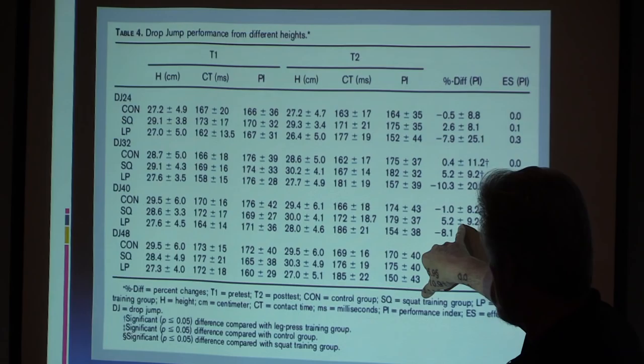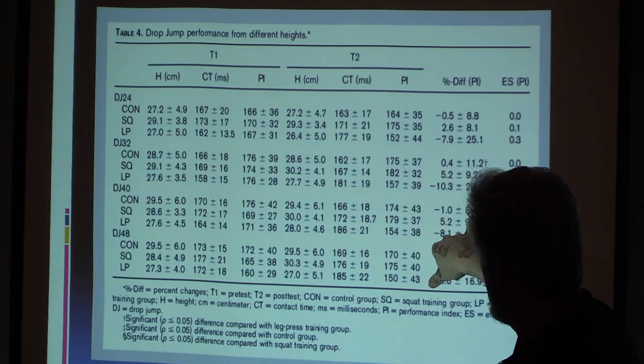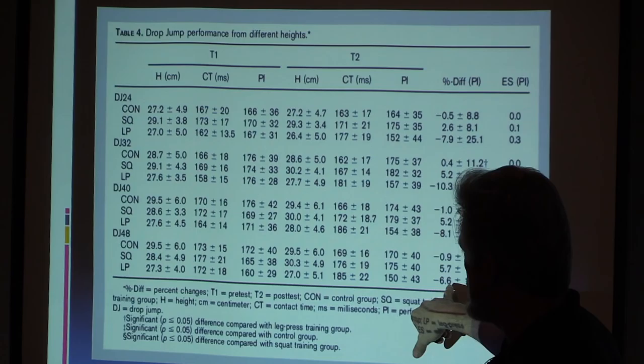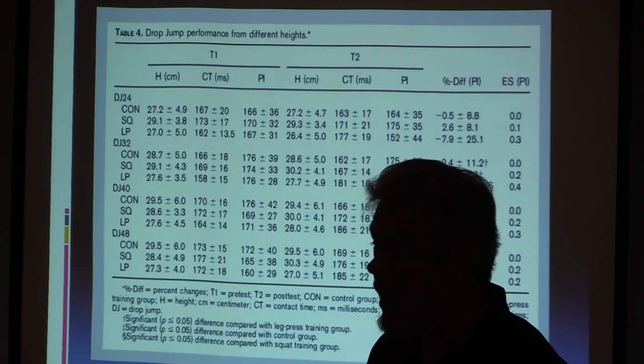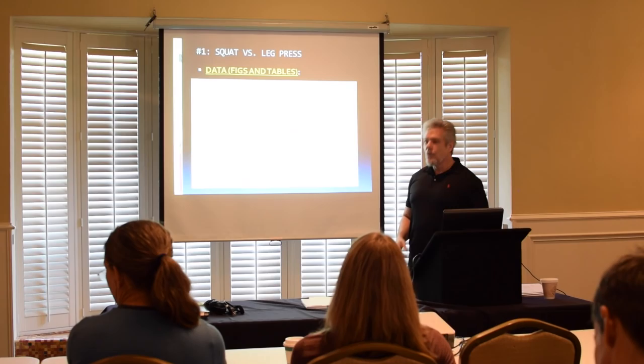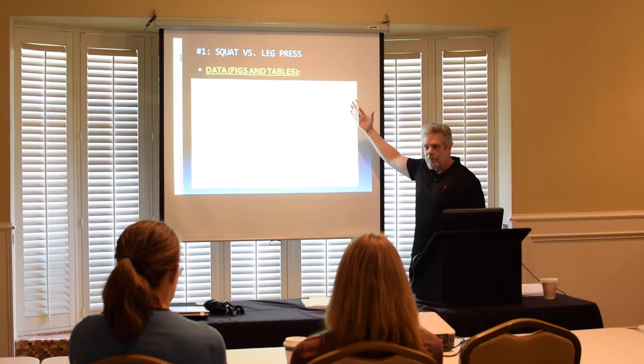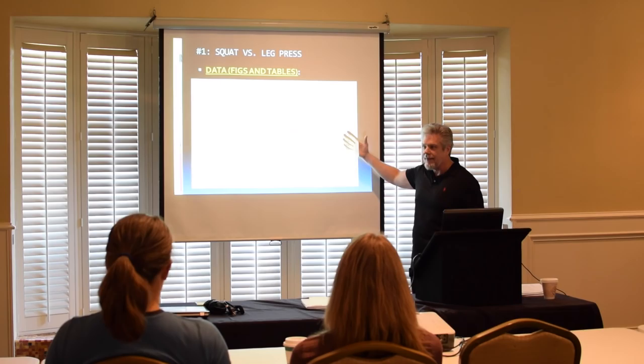If I want to improve my drop jump performance, I don't think I want a leg press — I'm going to bet on the squat. The control group just got the dwindles, wasting away. The leg press at the 40 cm group saw a decline in performance, same thing at 48 cm — but the effect sizes for the negative effect there are not that great. We can interpret the table, but it just doesn't give us much to go with.